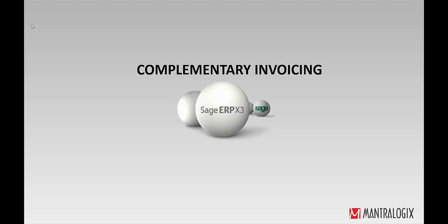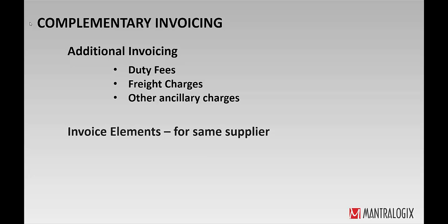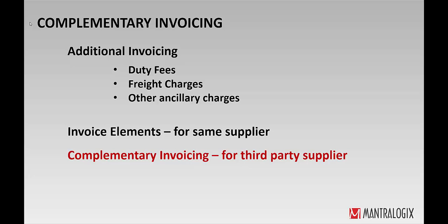Hi, this is Sai from Anthrologix. I'm going to give you a quick demo on creating a complimentary invoice in Sage ERP X3 version 6.5. A complimentary invoice, otherwise called an additional invoice, will let you add additional charges like duty fees, freight charges, or other ancillary charges to a different supplier on top of the item supplier invoice. That's the difference when we use invoicing elements for adding charges to the item supplier — a complimentary invoice lets you add charges to a different supplier.